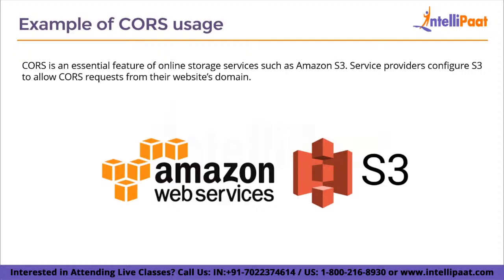Service providers configure S3 to allow CORS requests from their website's domain. When a user accesses the website and runs a script, the browser makes the request to S3. Since S3 is configured to allow the domain — you need to configure your Amazon S3 bucket to accept CORS requests — the request is completed and the content is delivered to the browser. More complicated cross-domain requests use pre-flighting to validate a request before it is actually performed. Pre-flighted requests include custom HTTP headers which help the server determine whether a request is valid and help protect sensitive information from abuse.